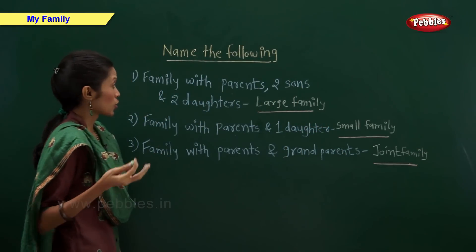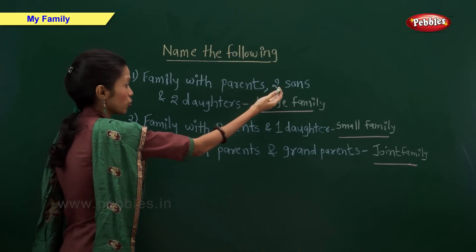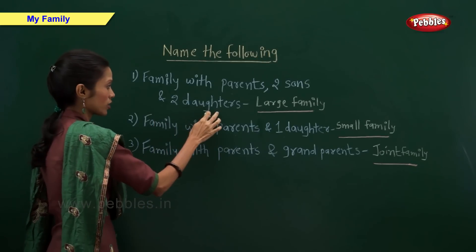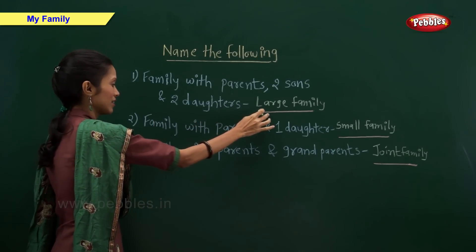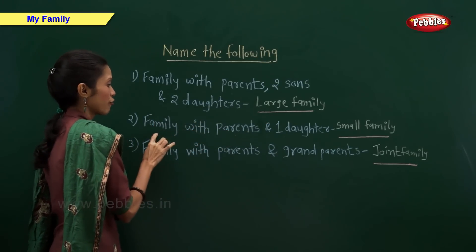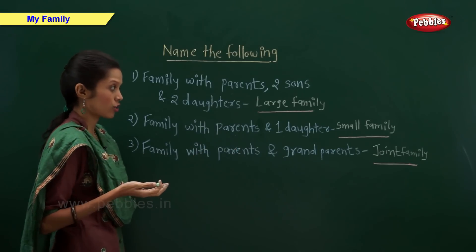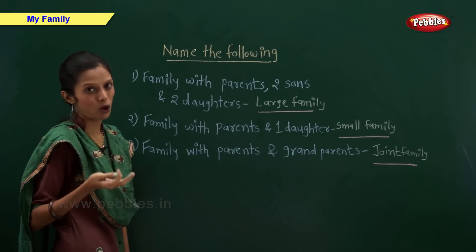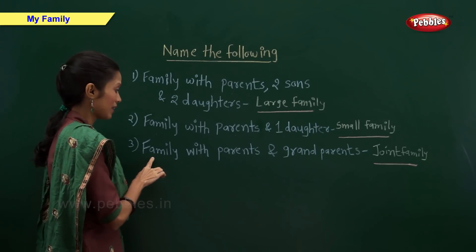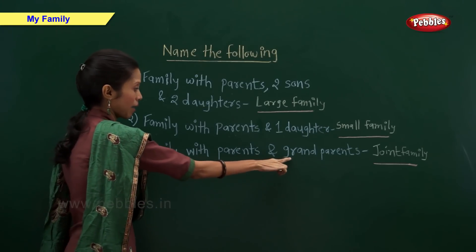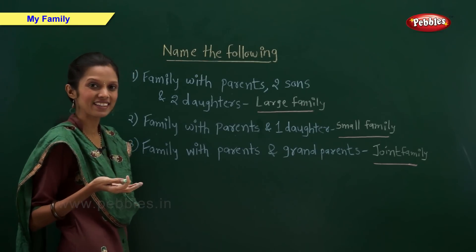To summarize: A family with parents, two sons, and two daughters is called a large family. A family with parents and one daughter is called a small family. A family with parents and grandparents is called a joint family.